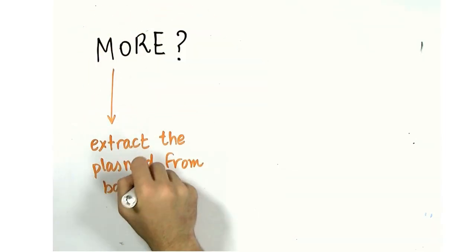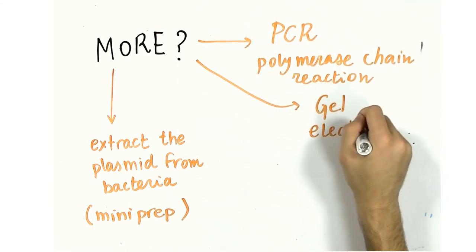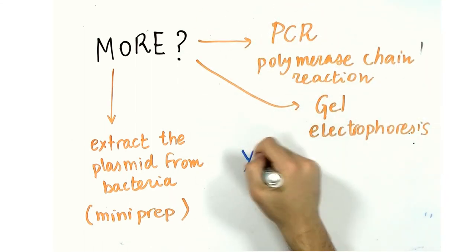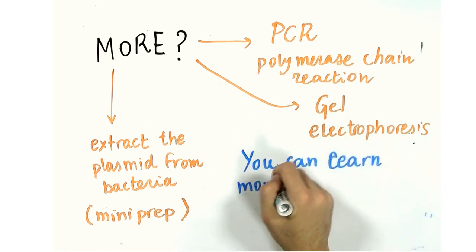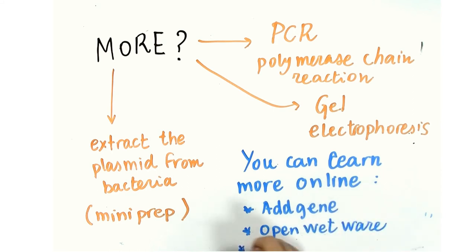You can conduct further analyses on your cloned E. coli by extracting the plasmid DNA, doing polymerase chain reaction or PCR, and gel electrophoresis analysis on your cloned DNA. You can learn more about these basic protocols on websites like AddGene and also others referenced in the supplemental resources.